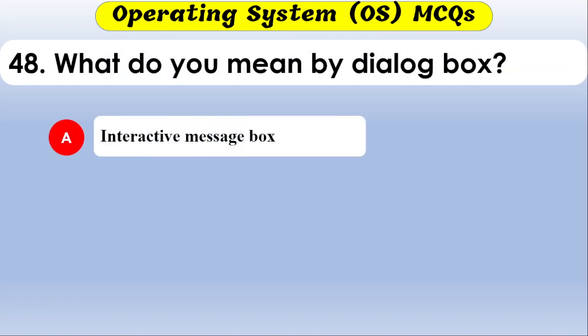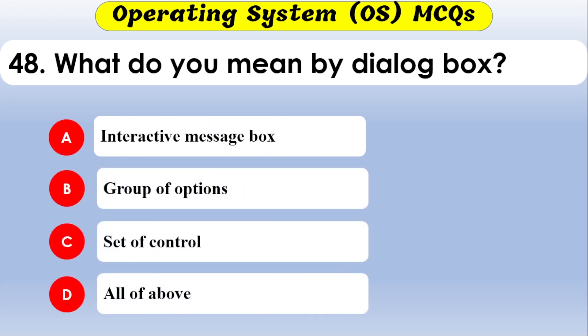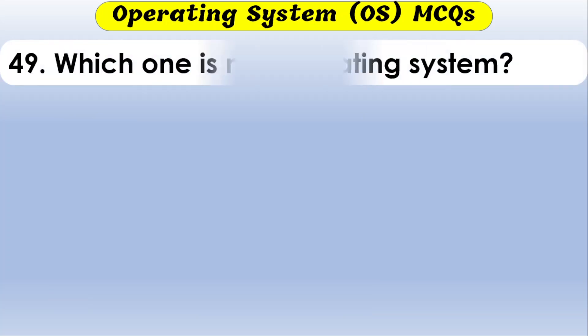What is a dialog box? The options are interactive message box, group of options, set up control, or all of the above. The correct option is all of the above — a dialog box is an interactive message box with a group of options and setup controls.